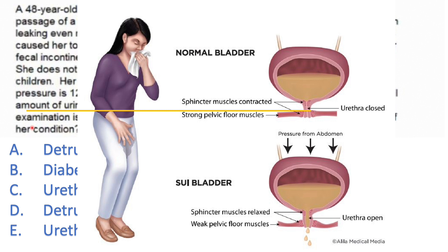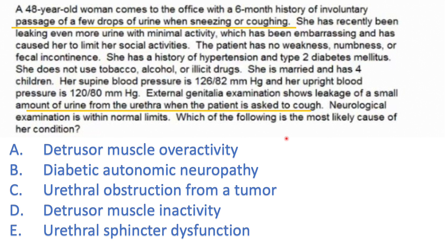Normally, the external urethral sphincter keeps voluntary continence so that urine doesn't leak. But when she's coughing, this increased intra-abdominal pressure beats the tone of her external urethral sphincter, which makes urine leak.